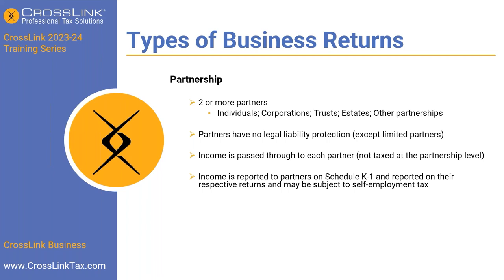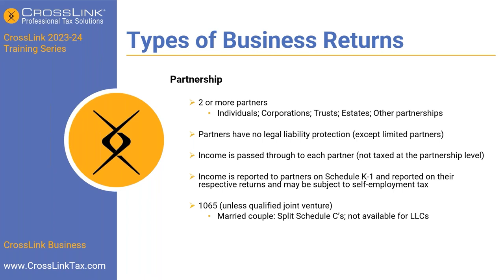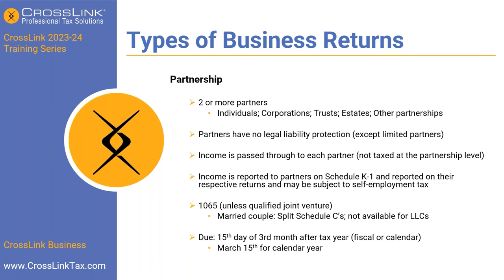We're going to talk more throughout this session on K-1s and Schedule Ks. Partnerships use the 1065, unless it's a qualified joint venture — in which case a married couple can split their Schedule Cs, though that's not available for LLCs. The due date is the 15th day of the third month after the tax year, which for a calendar year falls on March 15th.